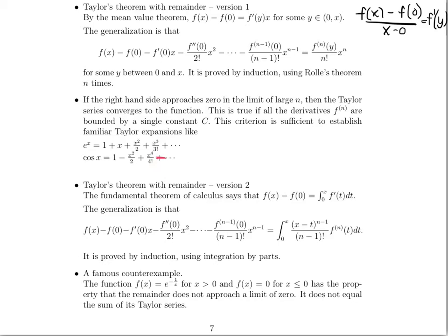We'll talk about Taylor's theorem with remainder in much greater detail in class. The second version uses the fundamental theorem of calculus: if you integrate the derivative on the interval from 0 to x, you get f of x minus f of 0. The generalization says that the difference between f of x and the first n terms of the Taylor series — starting from the function value up to the n minus 1 power of x — equals a particular integral. We'll be able to prove that by induction using integration by parts.